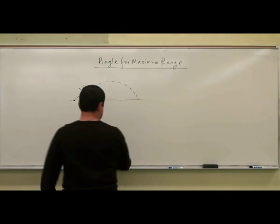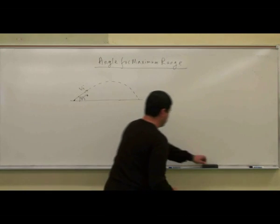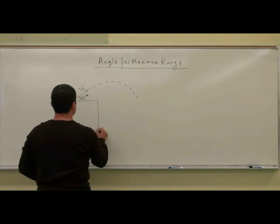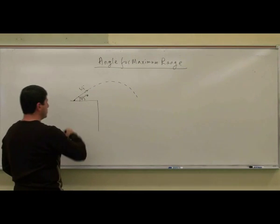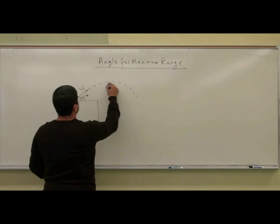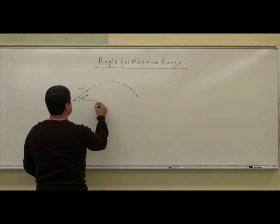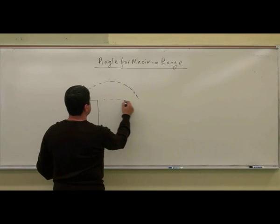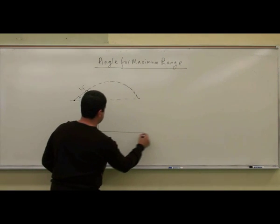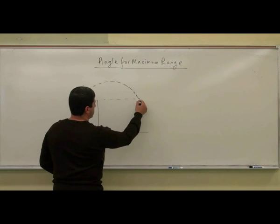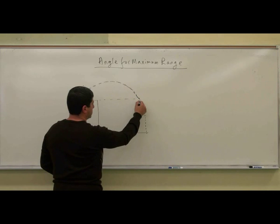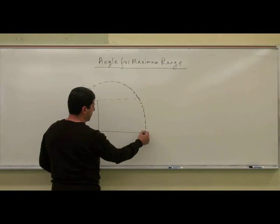But if you shoot the projectile from the top of a table or from the top of a cliff, and the projectile gives you maximum range for 45 degrees, look what's going to happen. The projectile is going to be coming down, angled down.